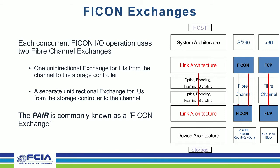One noticeable difference between FICON command mode and the FCP protocol used by SCSI is that FCP utilizes a single bidirectional fiber channel exchange between host initiator and storage target. However, with FICON, each IO operation uses two fiber channel exchanges: one unidirectional exchange for IUs flowing from the channel to the storage controller, and a separate unidirectional exchange for IUs back from the storage controller to the channel. That pair is what we commonly refer to as a FICON exchange.